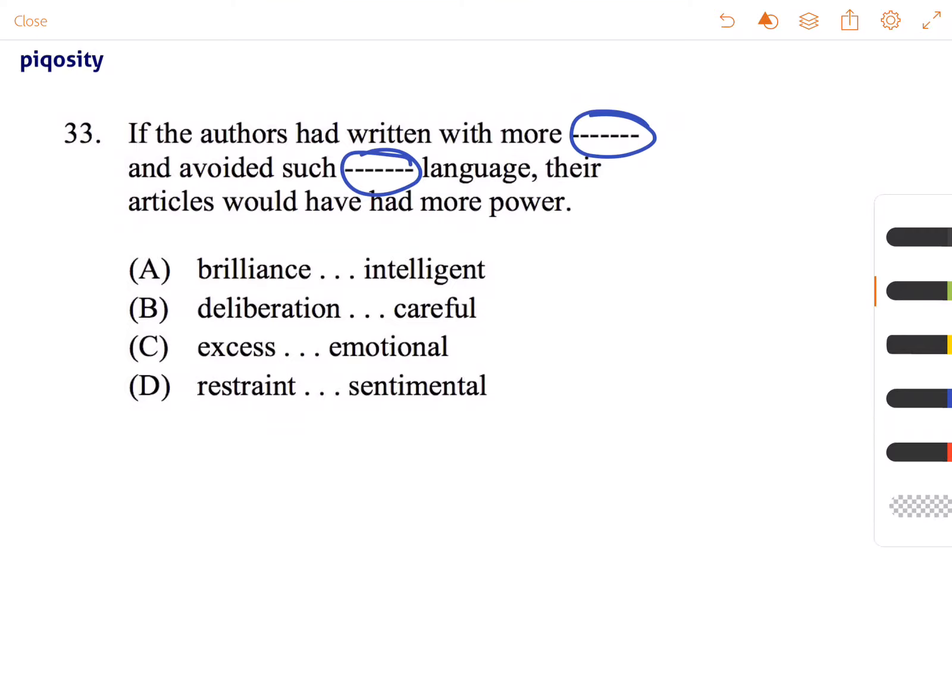So we have brilliance. Okay, that's positive. That's great. And avoided such intelligent language. Well, that's a positive and a positive, so we can knock that out. That doesn't make any sense in the sentence.